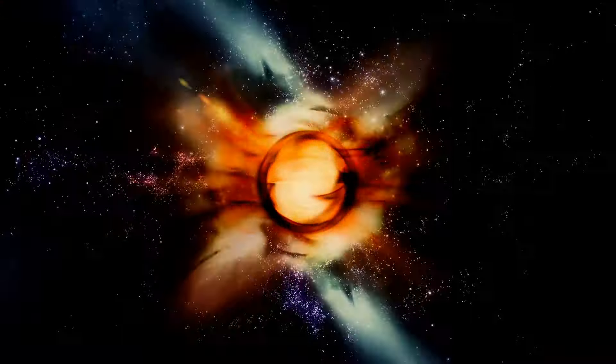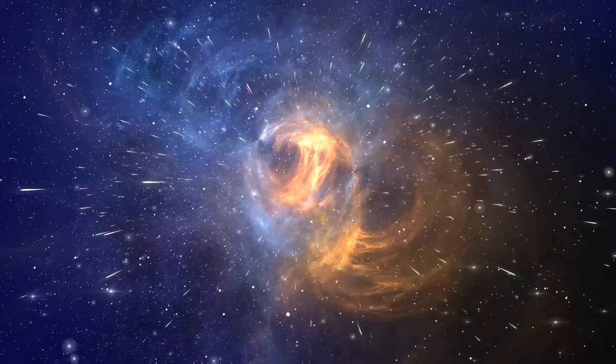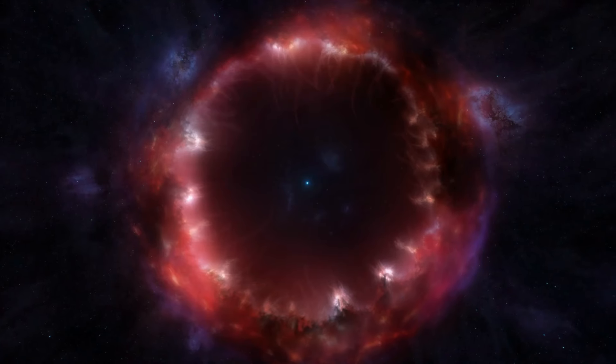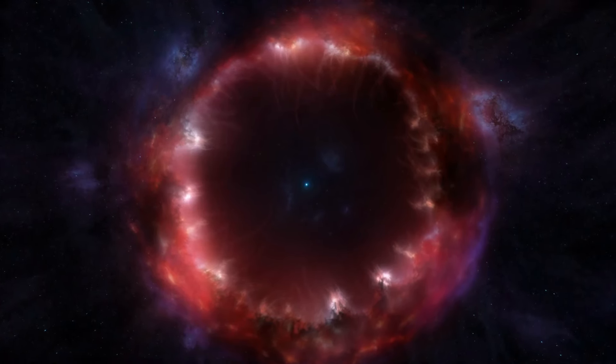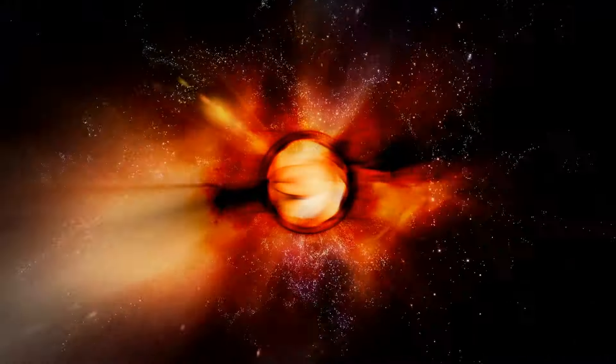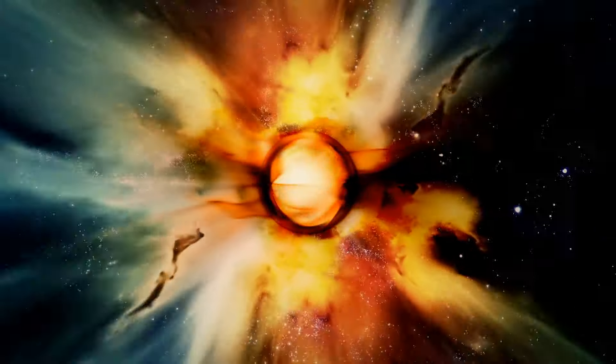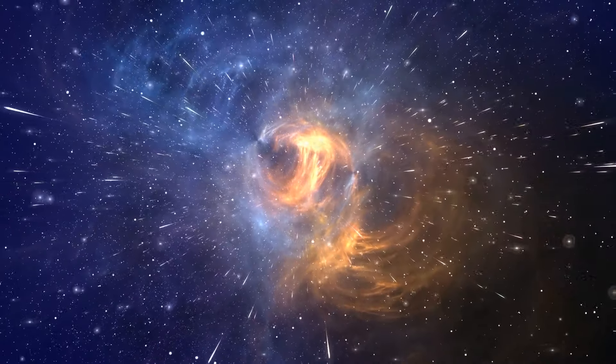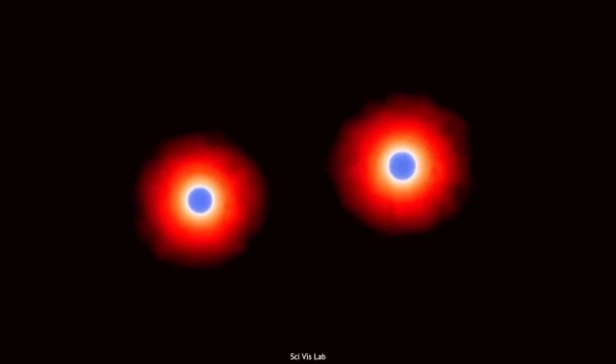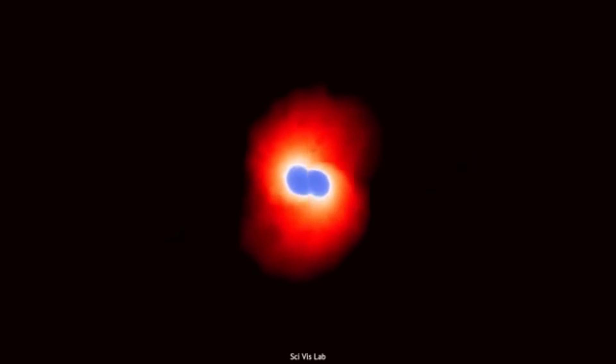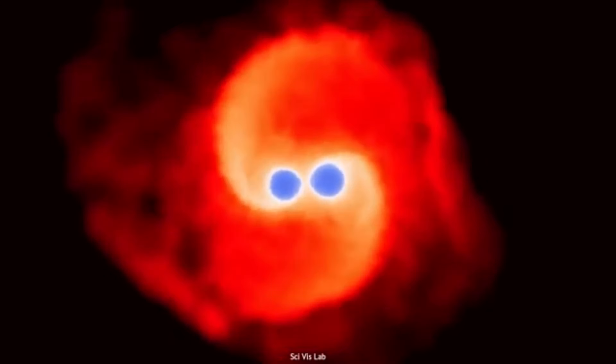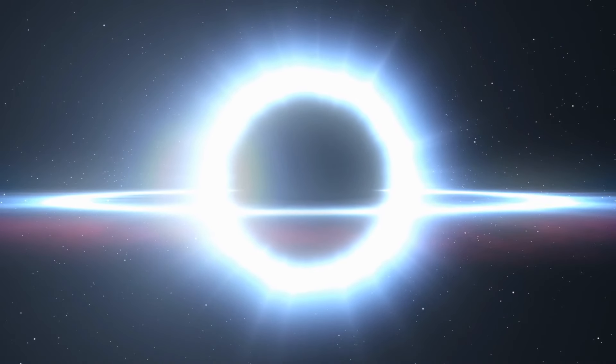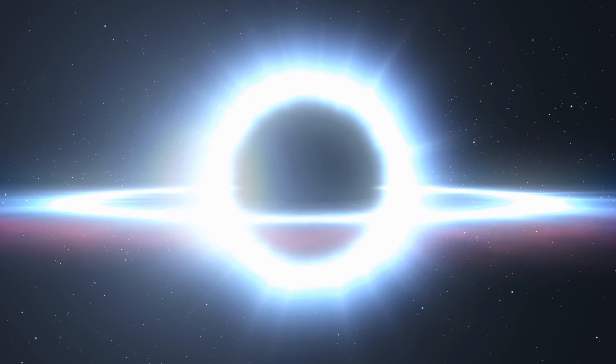Is Betelgeuse on the verge of becoming a supernova? As a red supergiant that is approaching the end of its life cycle, the possibility of a supernova event loomed large in discussions. Supernovae are the explosive deaths of massive stars that occur when they exhaust their nuclear fuel, leading to catastrophic changes in their core. Given Betelgeuse's status as a red supergiant nearing the final stages of its stellar evolution, astronomers began to investigate whether this unexpected dimming could signal the imminent arrival of such a spectacular explosion.